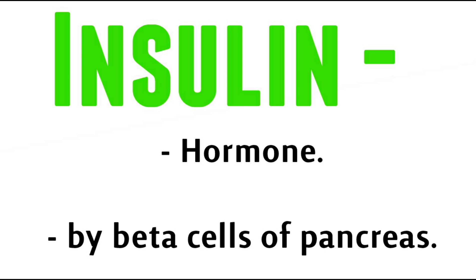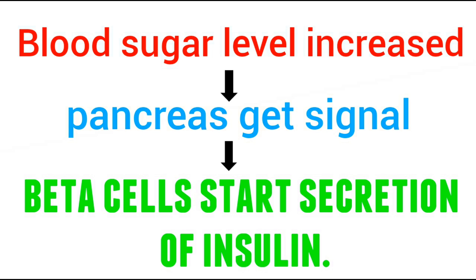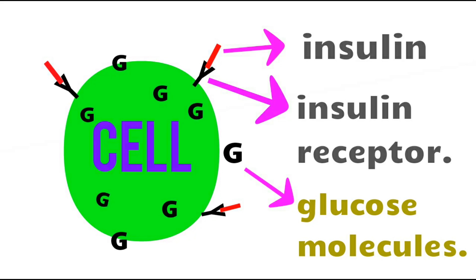When we eat something, it goes into the stomach where the digestion process occurs and food is converted into glucose. These glucose or sugar molecules are absorbed and get mixed with the blood, serving as the source of energy. When glucose levels are more than normal in the blood, the pancreas receives a signal and its beta cells start secreting insulin hormone. Every cell has a receptor where insulin molecules attach and signal the cell to allow glucose molecules to enter, providing energy. Insulin acts like a key that opens the cell's lock, allowing glucose to get into it.